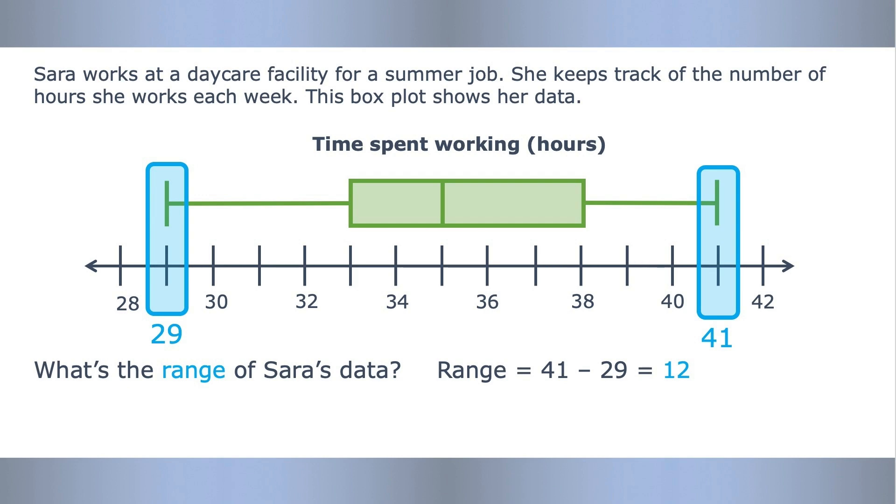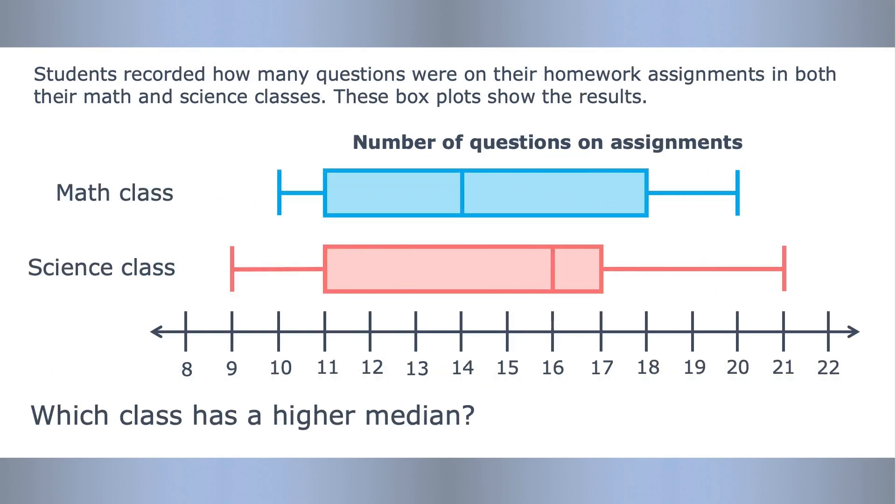Let's try an example comparing two box plots. Students recorded how many questions were on their homework assignments in both their math and science classes. These box plots show the results. Which class has a higher median? The median of a box plot is the line on the inside of the box. The math class has a median of 14, while the science class's median falls on 16. So the science class has a higher median.